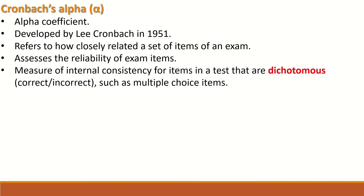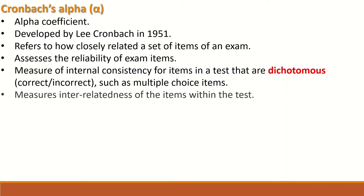Cronbach's alpha measures internal consistency of items in a test that are dichotomous — correct or incorrect — such as multiple-choice questions. Alpha measures the interrelatedness of the items within the test.